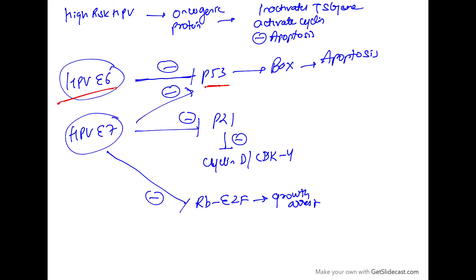E7 also inhibits p53. And we have seen that it inhibits the RB-E2F interaction. Normally RB-E2F causes growth arrest, but now E2F will get released and will cause progression of the cell cycle, transcription, and growth.